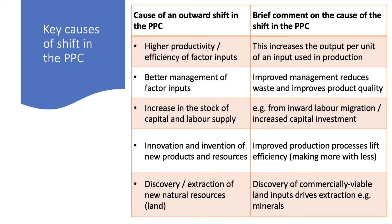An increase in the labour supply from, perhaps, migration or natural population growth is another factor. Innovation and invention is crucial to essentially make more with fewer resources. And the discovery and extraction of new natural resources is often a quick way to potentially increase your output, particularly in the primary sector — oil, gas, and other minerals. So those are the key factors causing a shift in the production possibility curve.